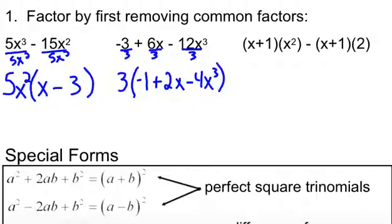Now, the next thing we want to look at is some special forms. These are ones that you should start to recognize. Your last term is a perfect square, and your middle term is 2 times the first term times the last term.